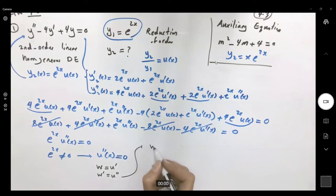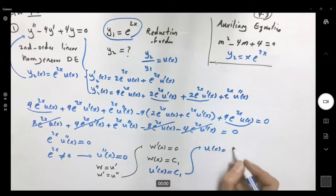So w of x becomes just c sub 1. But w is u prime. So u prime at x is c sub 1. Or u of x becomes c sub 1 x plus c sub 2.